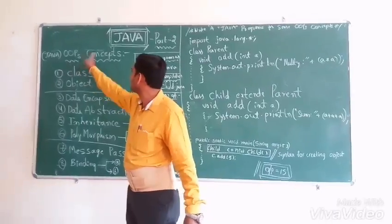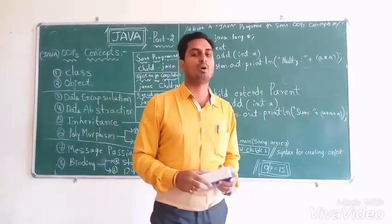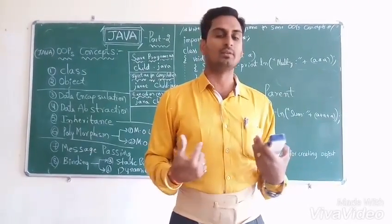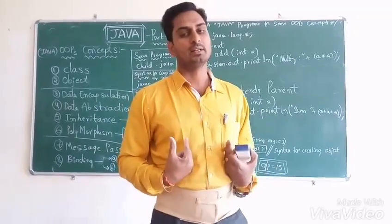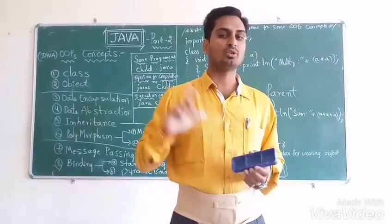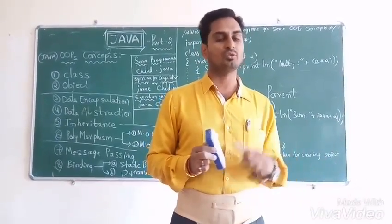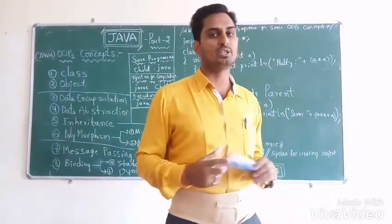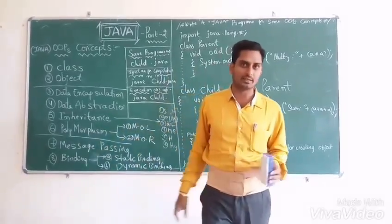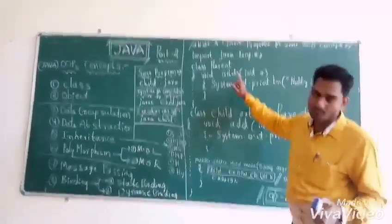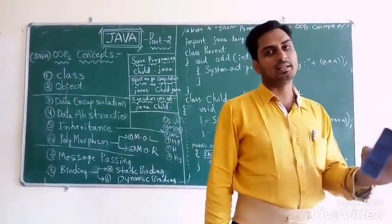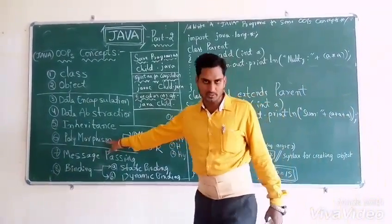The sixth concept is Polymorphism. Poly means many, morphism means forms — so many forms. For example, take myself: I am a teacher to you, a student to my professor, a son to my father, a father to my son, and a friend to friends. One object acting differently in different situations. The technical definition: one method or object will act differently in different situations is called polymorphism.